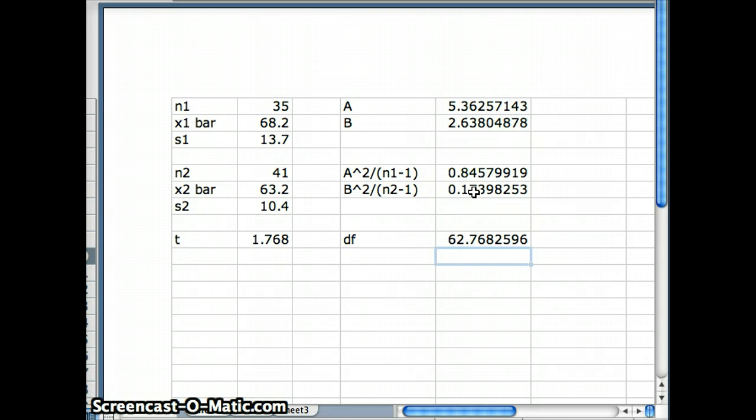So to get degrees of freedom, that's going to equal (a + b)² divided by the sum of those two: a² over (n₁ - 1) plus b² over (n₂ - 1). And what does that give me for degrees of freedom? It gives me 62.76. We will always round down.